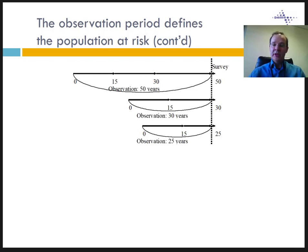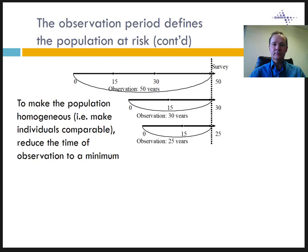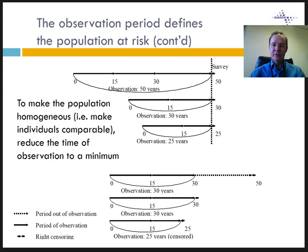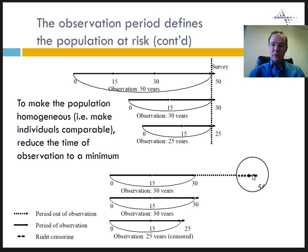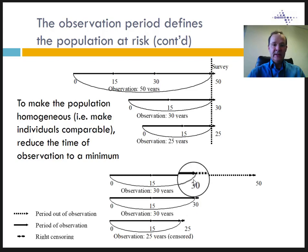To make the population homogenous, that is, to make lifelines comparable, one solution is to reduce the time of observation. In the second diagram, we have imposed that the time of observation stops at age 30. The right censoring time will be age 30. The time from age 30 to 50 is discarded for the first individual, as seen as a dotted line. We can therefore compare the 50-year-old and the 30-year-old until the age of 30.